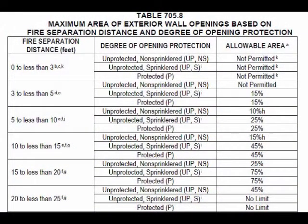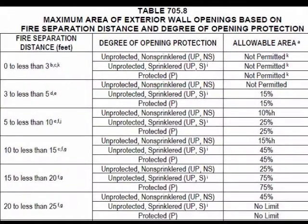Shown here is the applicable portion of Table 705.8, which specifies the maximum area of both protected and unprotected exterior wall openings as a function of fire separation distance. For a non-sprinkled building located with a fire separation distance of 12 feet, up to 15% of the wall on each story is permitted to be unprotected, and up to 45% of the wall is permitted to be a protected opening, protected in accordance with Sections 716.5 and 716.6.